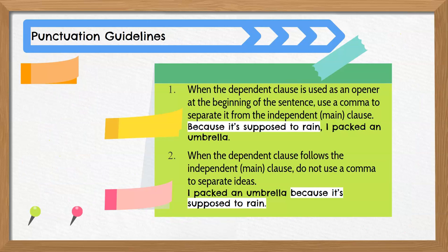Let's talk about punctuation. A complex sentence can be written in two ways. The first way needs a comma, and the second way does not. Rule number one: when the complex sentence begins with a dependent clause, you must use a comma before the independent clause. This comma helps you keep your ideas organized for the reader. For example: because it's supposed to rain, I packed an umbrella. The sentence starts with the AWUBAS word because, which indicates the dependent clause. The comma lets us know that the opener is not the main idea.